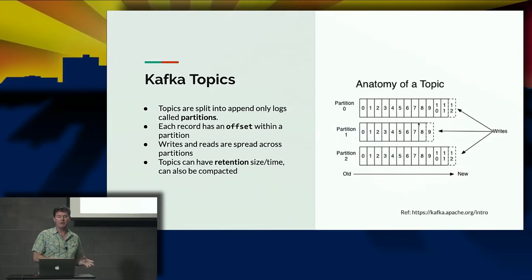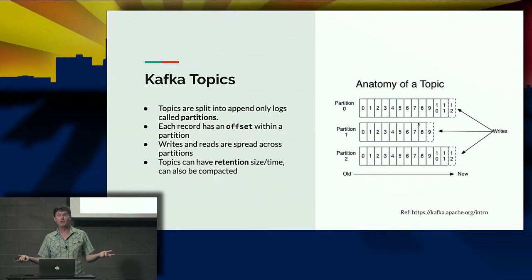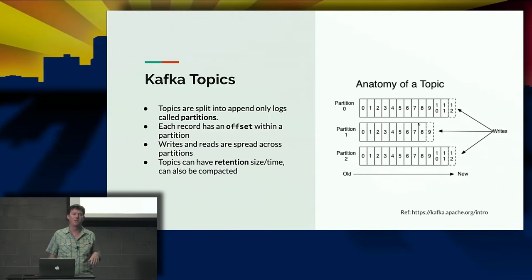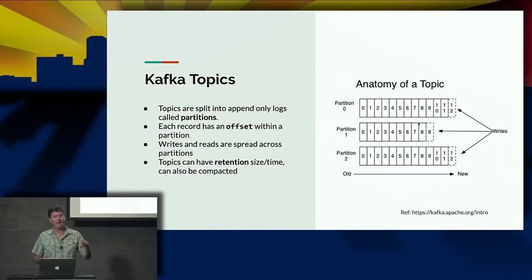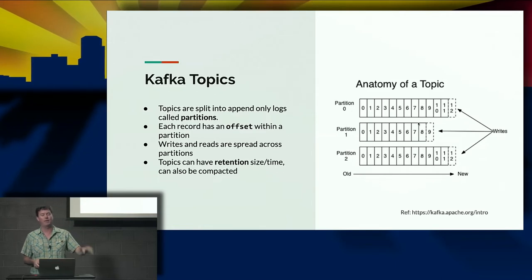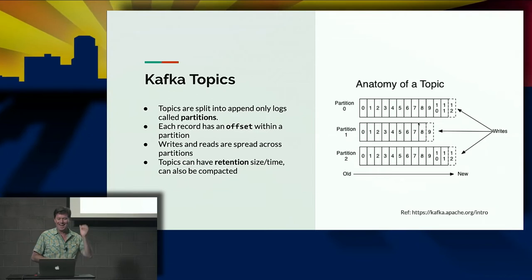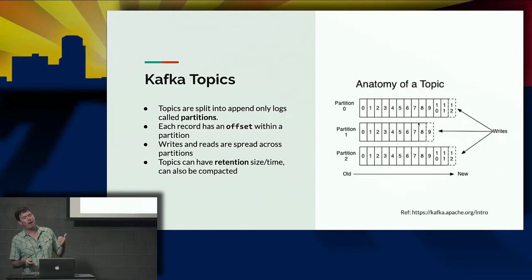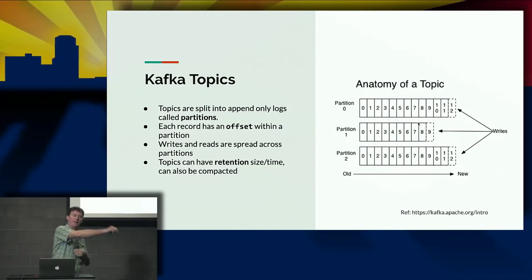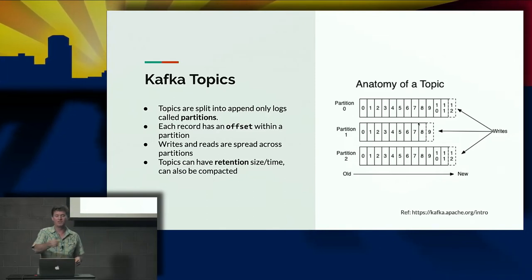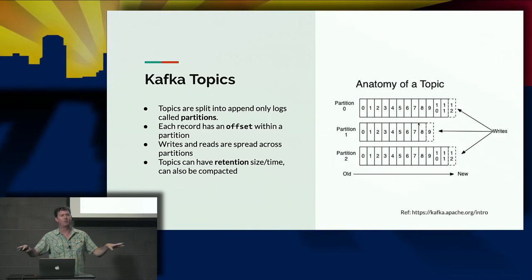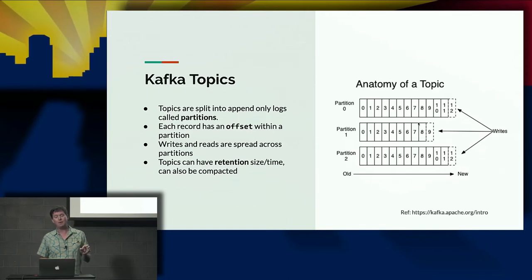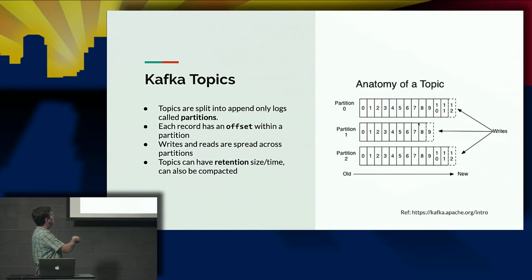Kafka topics are split into partitions. Partitions are distributed across brokers. If you can distribute them evenly, that's best — otherwise you can end up with an imbalance in load on the brokers. Each record has an offset associated with it inside the partition. Writes and reads are spread across partitions: producers write across partitions and consumers read across partitions.